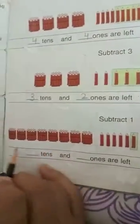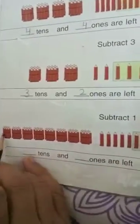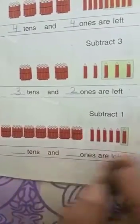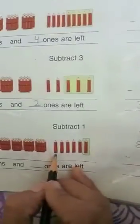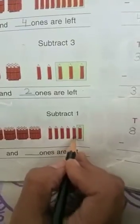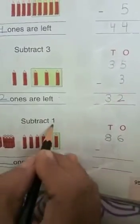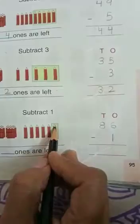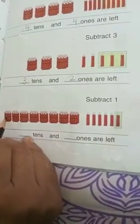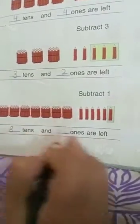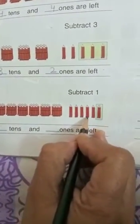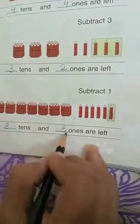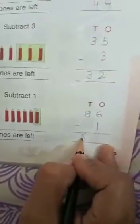Now next question: subtract 1. We have to subtract 1 pencil. There are 8 tens and 6 ones. We subtract 1 and cut that pencil. Now how many pencils are left? 8 tens and 5 ones. The answer is 8 tens and 5 ones — 85.